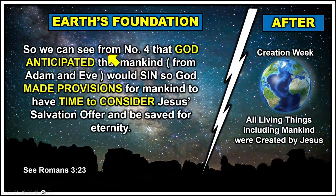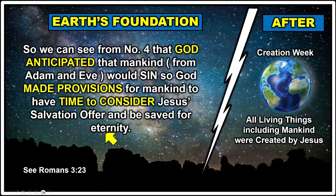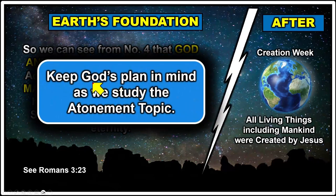We can see that God anticipated that mankind, starting from Adam and Eve, would sin. So God made provisions for mankind to have time to consider Jesus' salvation offer and be saved. This is what we're going to be looking at in these video studies. Keep God's plan in mind as we study the atonement topic — this is God's plan put in place before he even created mankind, and he is executing it even today.